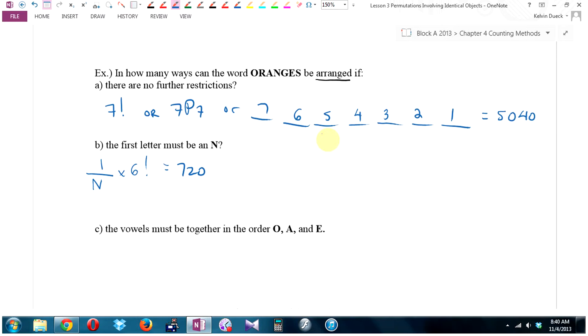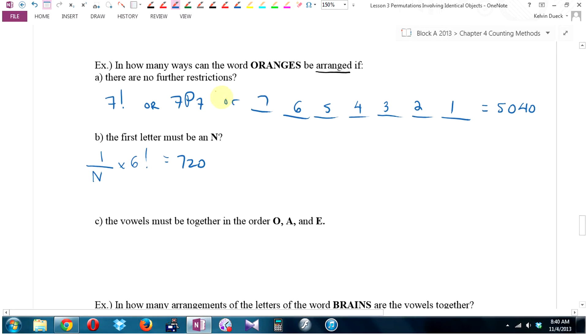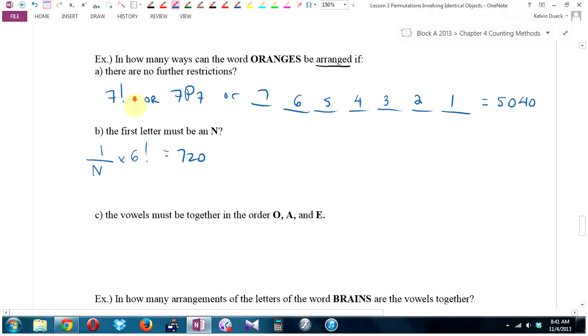It said there are no further restrictions. If there's no further restrictions you can just go 7 factorial, or 7 pick 7, or 7 times 6 times 5 times 4 times 3 times 2 times 1. The first method is the fastest. The last method is my fallback when I don't know what to do - I go back to the fundamental counting principle. Then for number B, what if the first letter must be an N? We said there's one way to pick an N, now you have six letters left in the Scrabble bag.